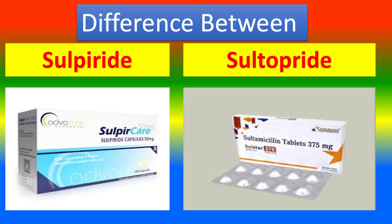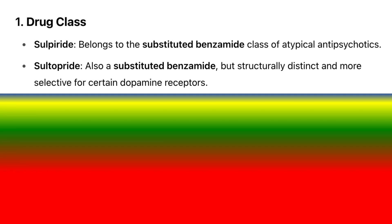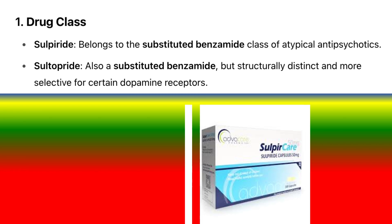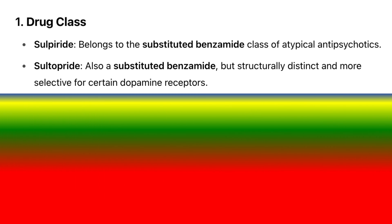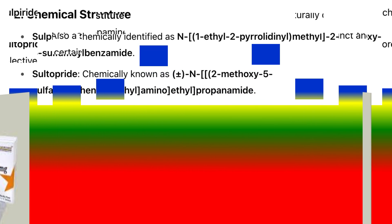Here is a detailed comparison of Sulpiride and Sultopride presented in a heading-by-heading format, highlighting 15 key differences between the two drugs. 1. Drug class: Sulpiride belongs to the substituted benzamide class of atypical antipsychotics. Sultopride is also a substituted benzamide, but structurally distinct and more selective for certain dopamine receptors.